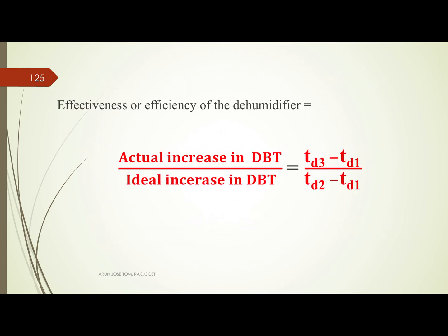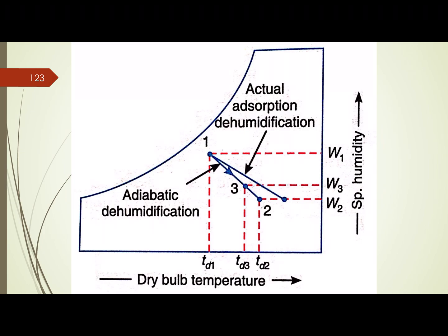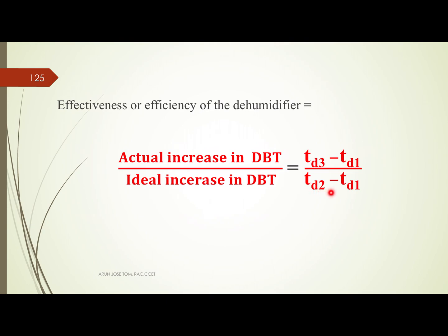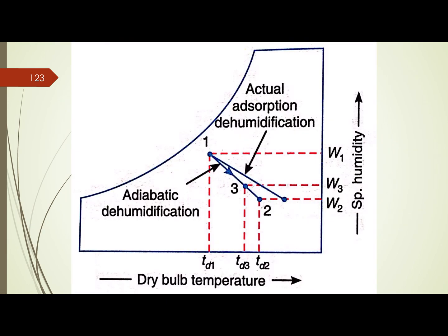The effectiveness of the dehumidifier is the actual increase in dry bulb temperature divided by the ideal increase in dry bulb temperature. That is (TD3 - TD1) / (TD2 - TD1), where TD2 represents the ideal case.